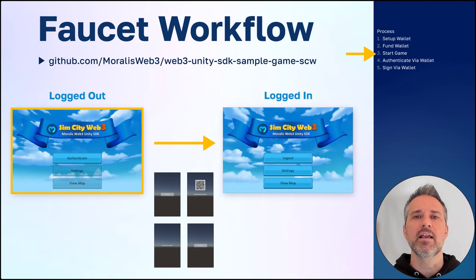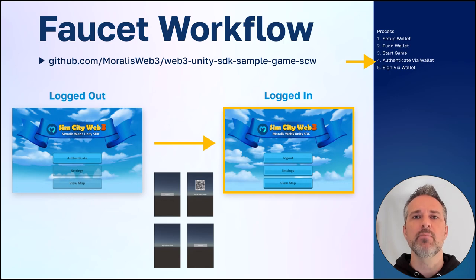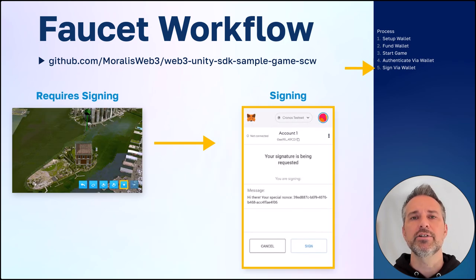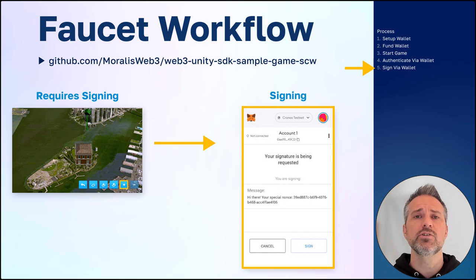Next, you start any game or dApp that is enabled for Kronos testnet. The SimCity Web3 game works well. You authenticate using the QR code and the mobile version of your Metamask wallet. Periodically during the game, for any transactions that make changes to the blockchain, you'll need to sign a transaction. This will open up your Metamask wallet, allowing you to confirm and sign the transaction.